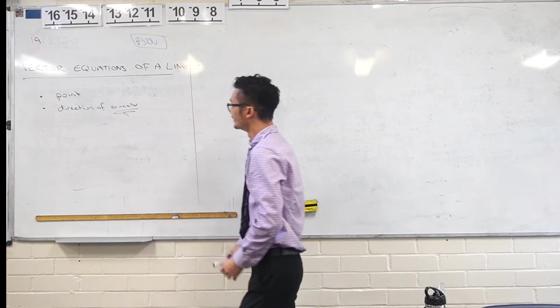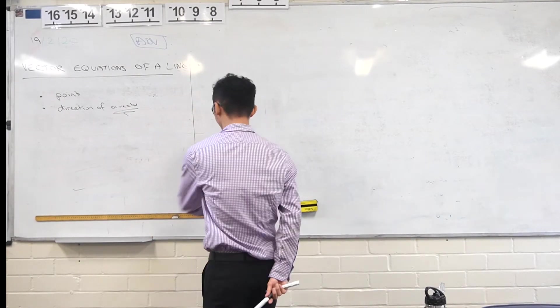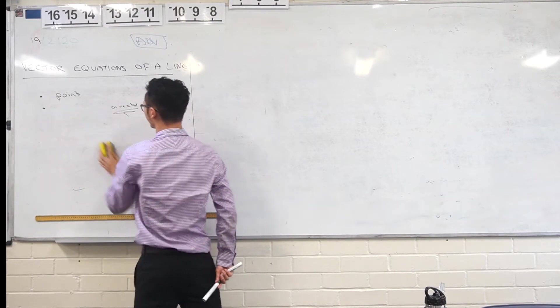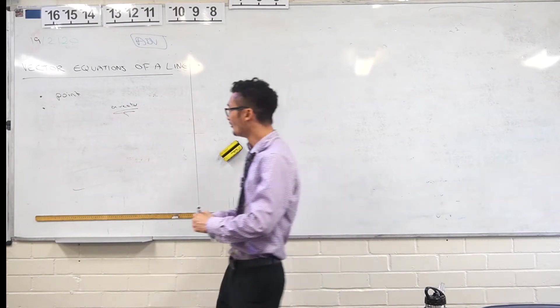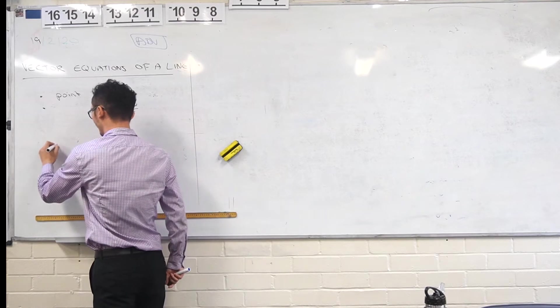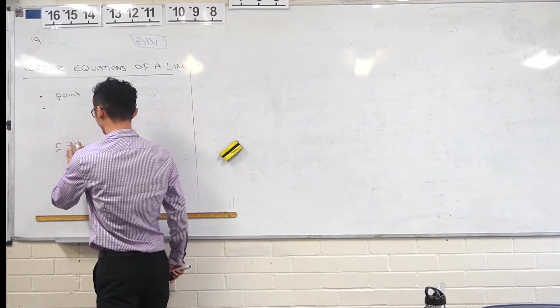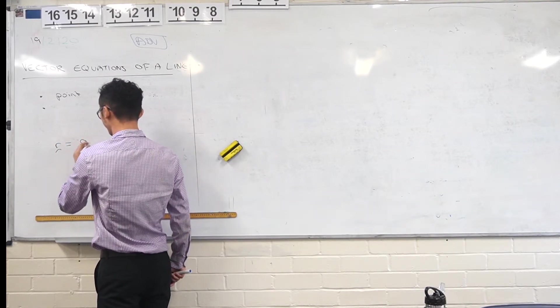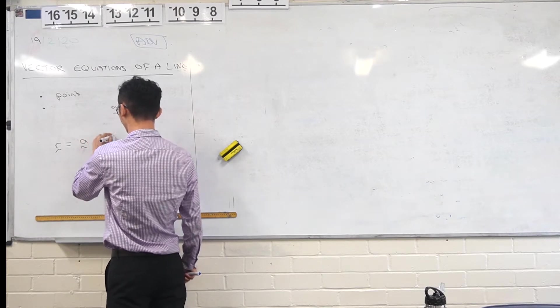So that's what we're looking for, right? So we need a point, and actually we need a vector. So maybe I'll make that clearer, we'll just say vector. So the form that we had was R, some vector, is going to be equal to A plus lambda B.